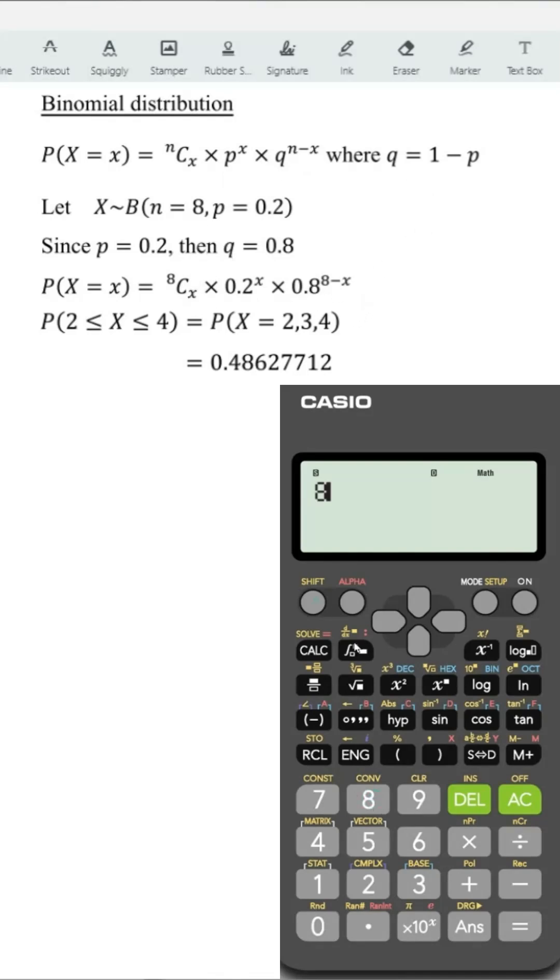Under this general function, we have 8, shift, divide, alphabet x times 0.2 to the power of alphabet x, times 0.8 to the power of 8 minus alphabet x.